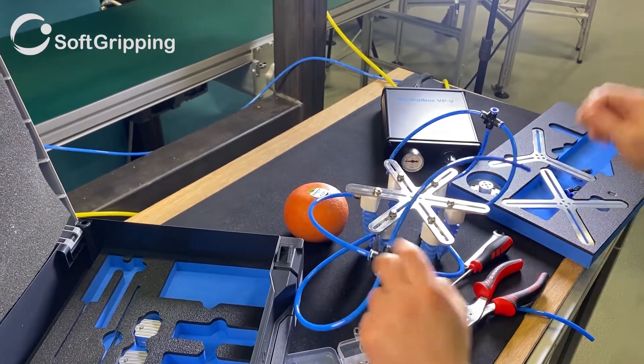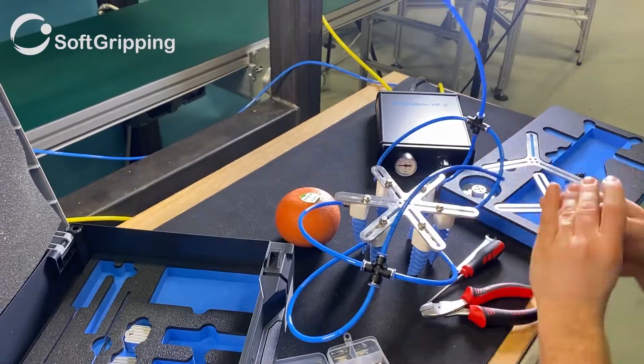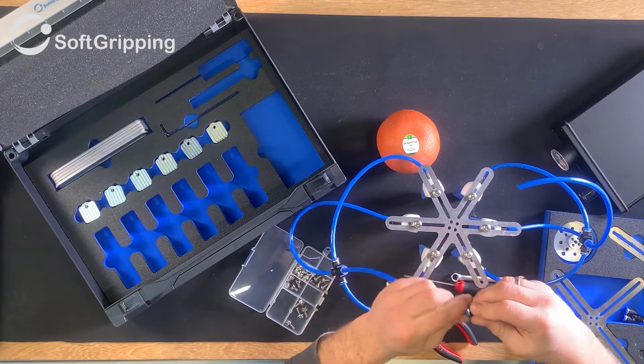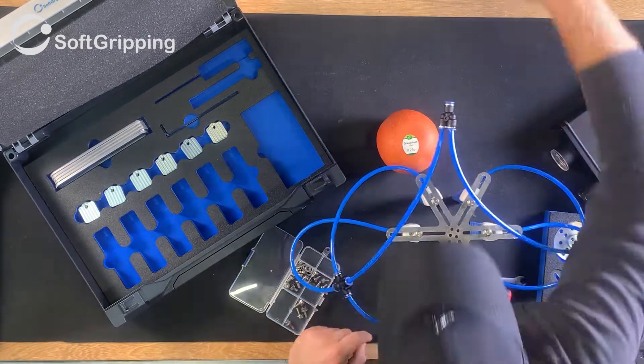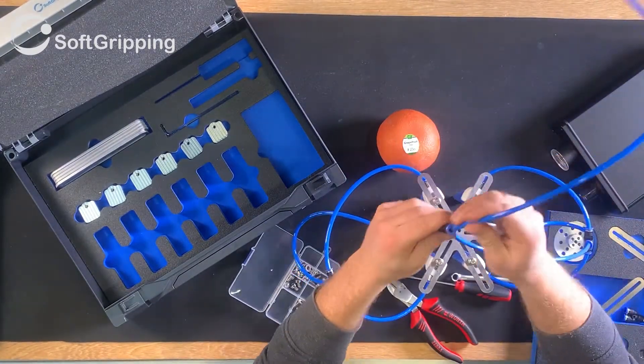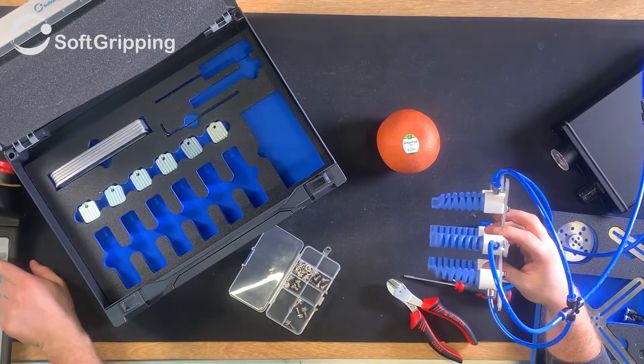Cut a piece of tube and put it into the adapters provided. Now connect both tubes to one adapter that goes into the air supply and controls the fingers.